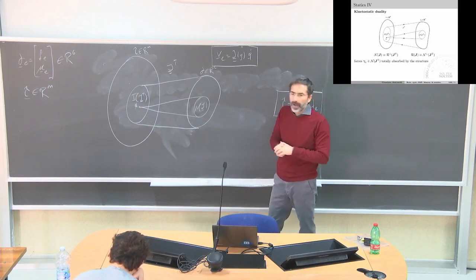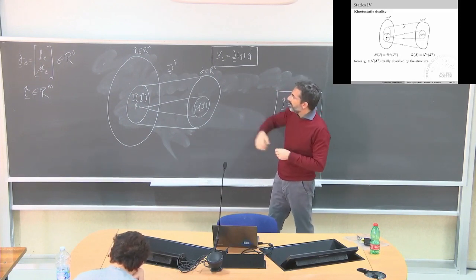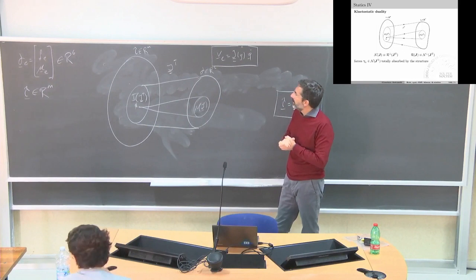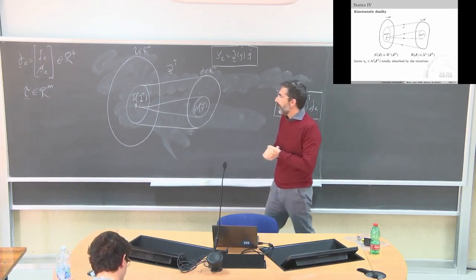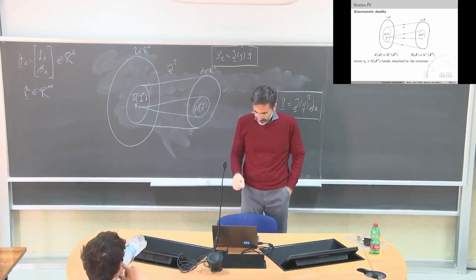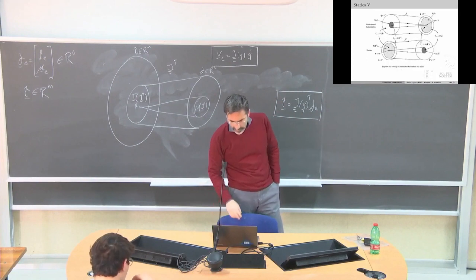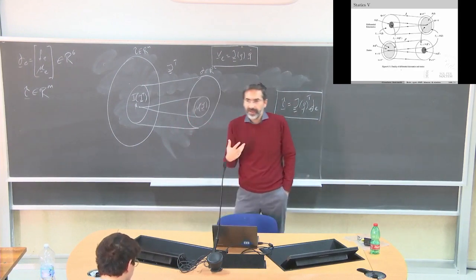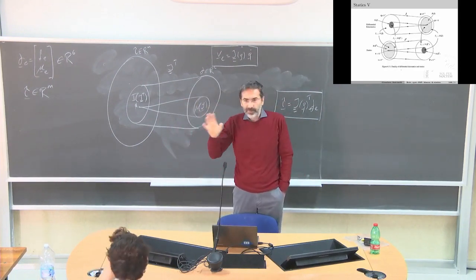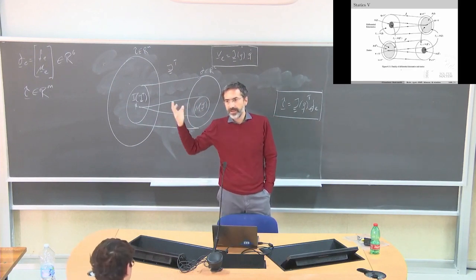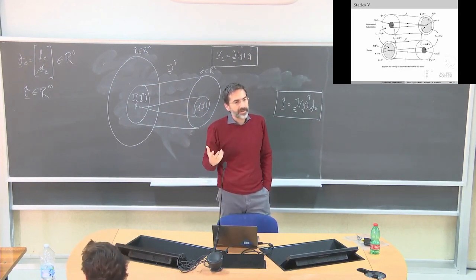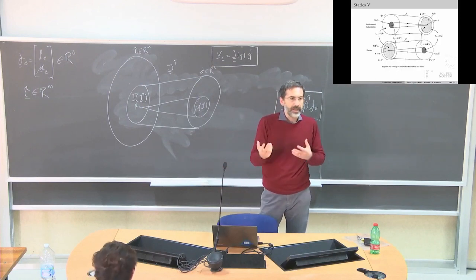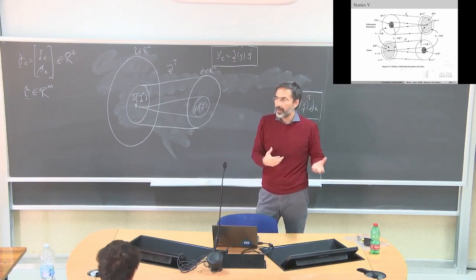We can appreciate a duality between this mapping and the mapping obtained for velocities. This graphical representation is a little bit complex, but if you understand it — and we are going to draw it piece by piece — it means that you understand quite a lot about the role of the Jacobian in mapping velocities and forces along a robotic structure.